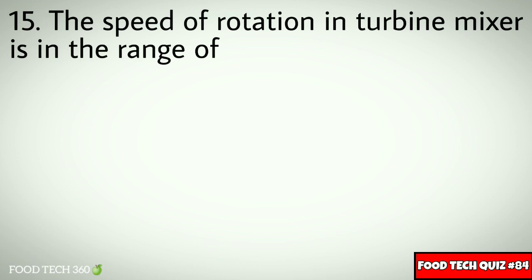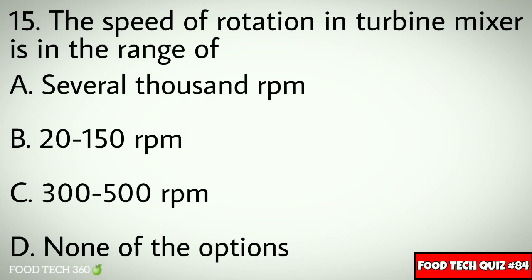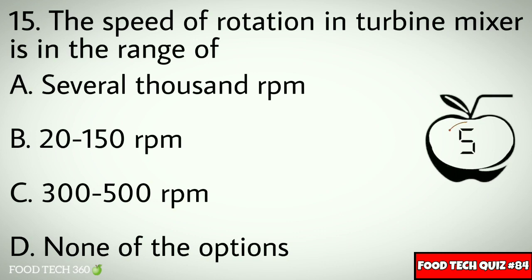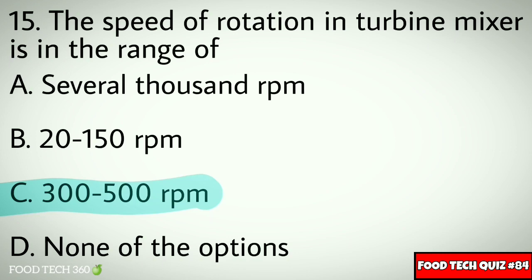Question number 15: The speed of rotation in a turbine mixer is in the range of — Options: A. Several thousand RPM, B. 20 to 150 RPM, C. 300 to 500 RPM, D. None of the options. Correct answer: C. 300 to 500 RPM.